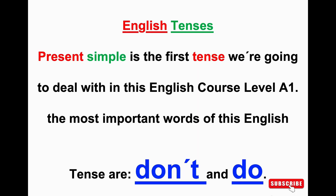Present simple is the first tense we're going to deal with in this English course, level A1 or level 1. The most important words of this tense are two words: the first word is DON'T, which we use to make the negative form, and DO, which we use to make questions.